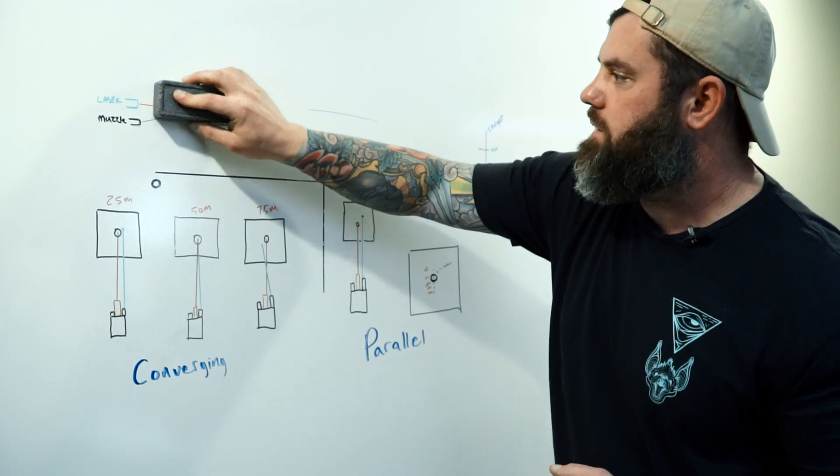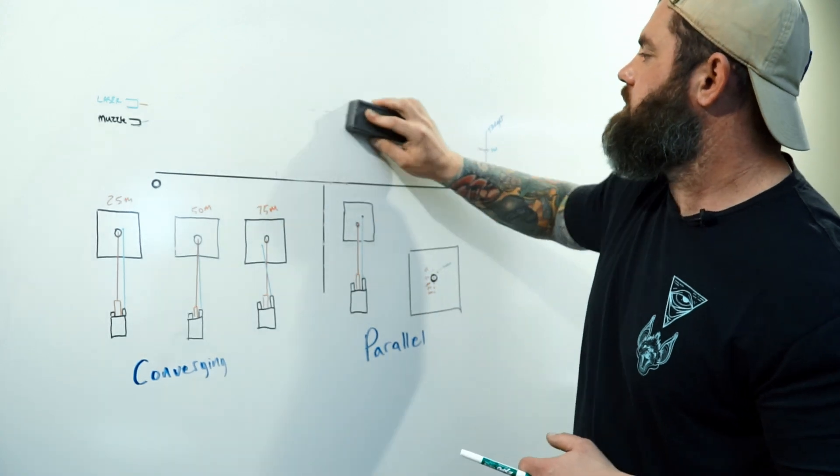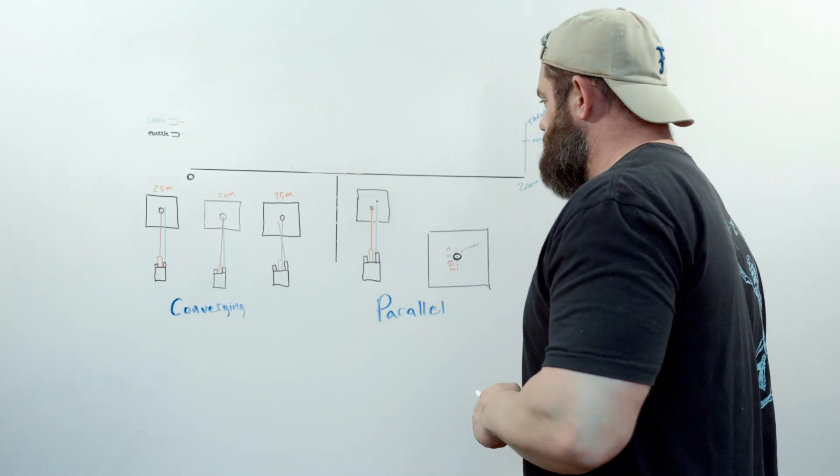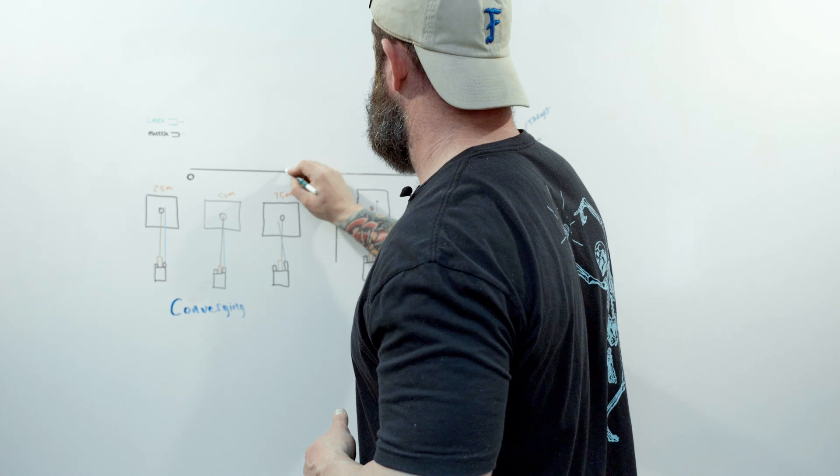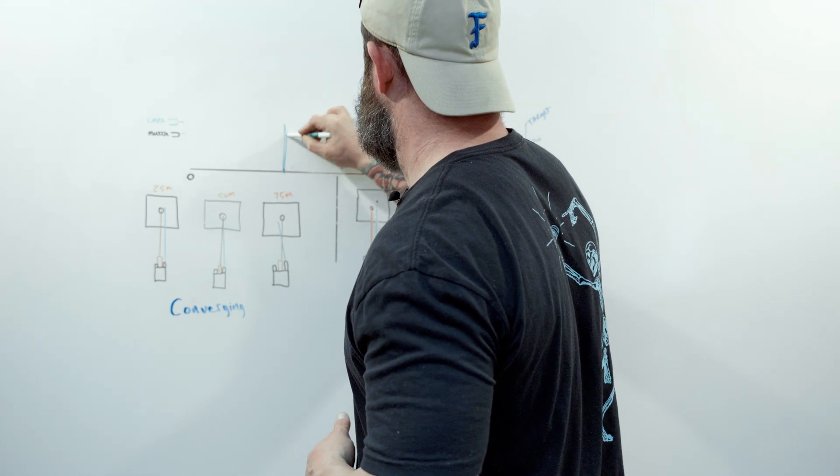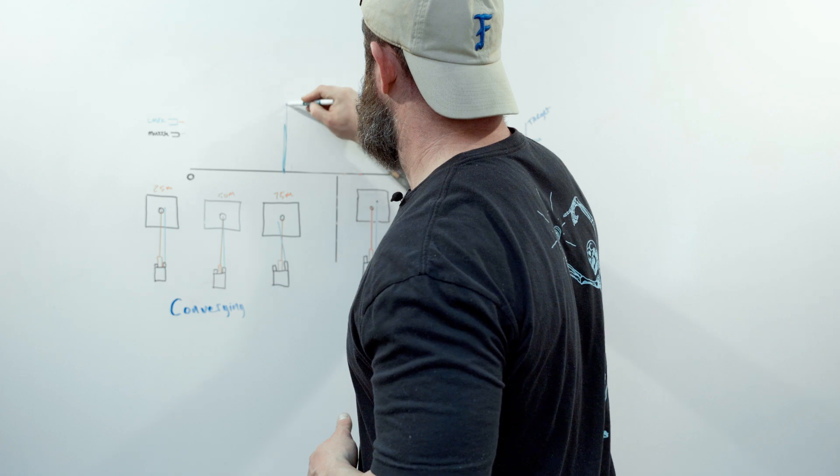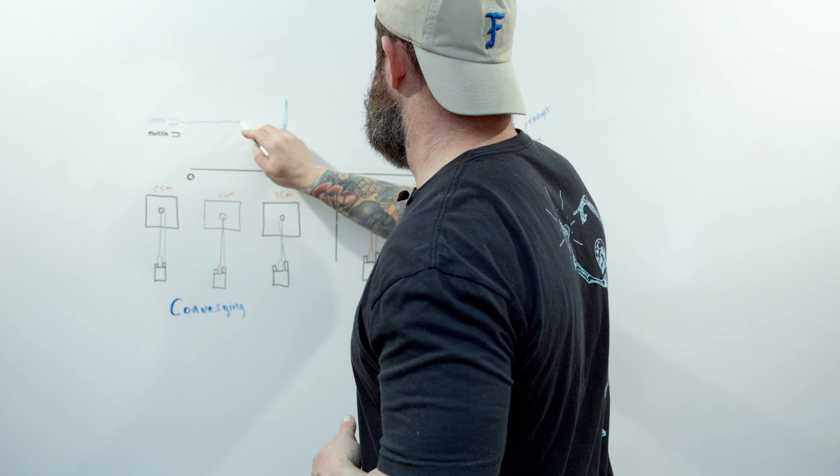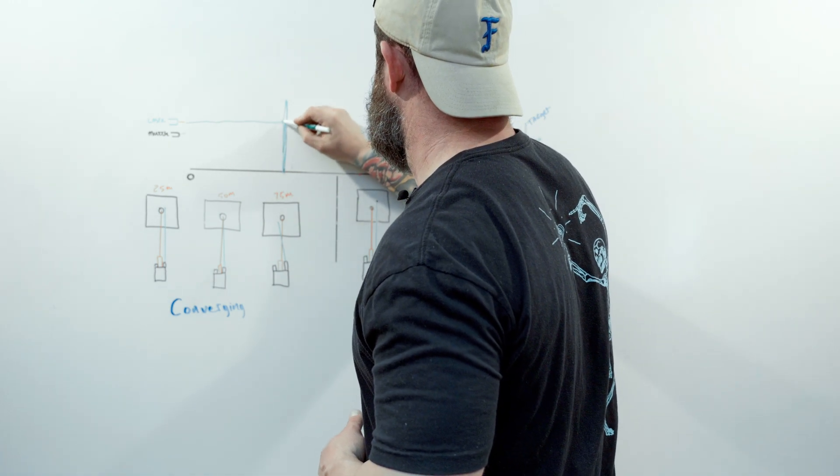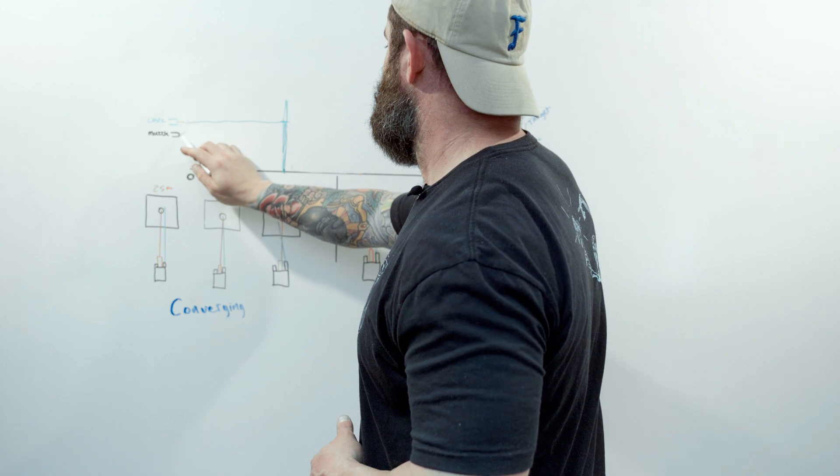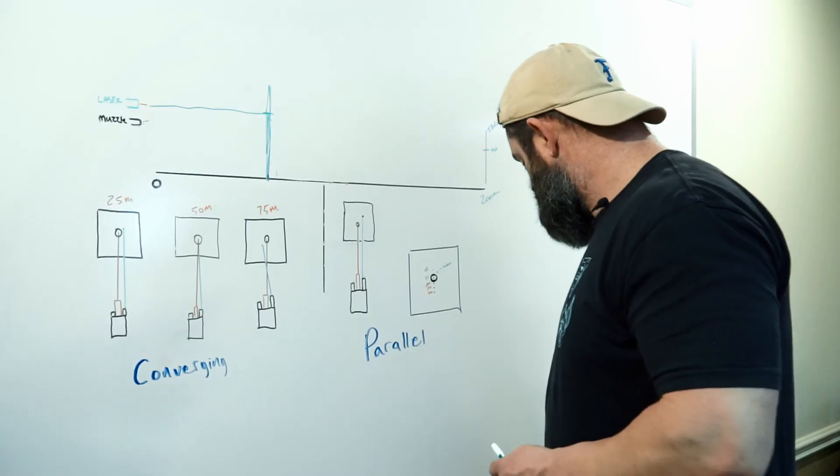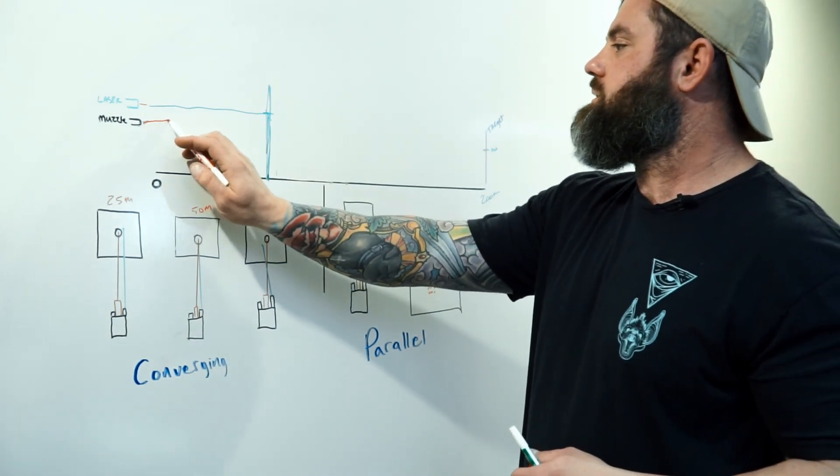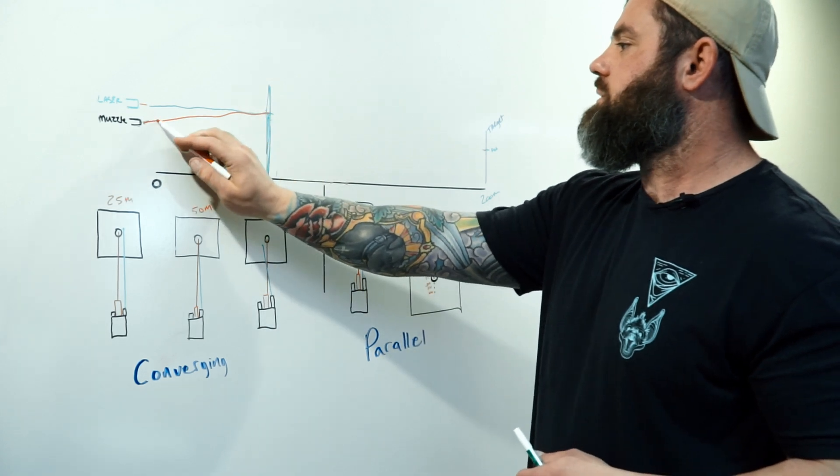We're going to get rid of these lines. So let's call this 50 meters here. Here's your target stand. We know that this laser is zeroed at 50 meters, right there. The rifle or pistol or cannon or whatever is also zeroed at 50 meters. Excuse my squiggly lines.